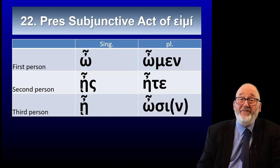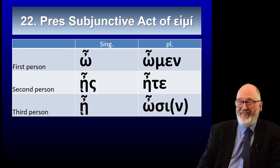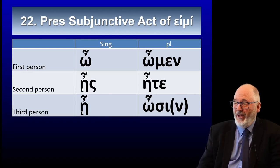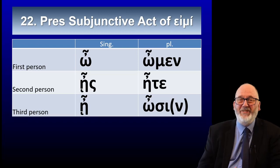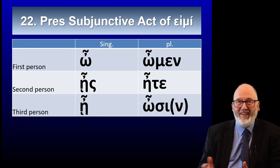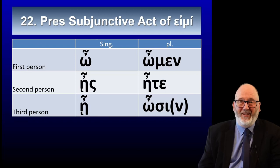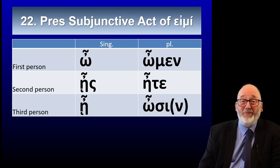Here we have the present subjunctive active of eimi. The present subjunctive of eimi is ō, ēs, ē, ōmen, ēte, ōsin. Do you recognize them? They are exactly the endings used on the regular present subjunctive actives of all verbs. With eimi, we've just lost the verb entirely into the endings. You will recognize them when you see them. Eimi, of course, is a mi-verb.